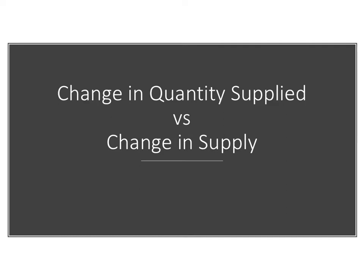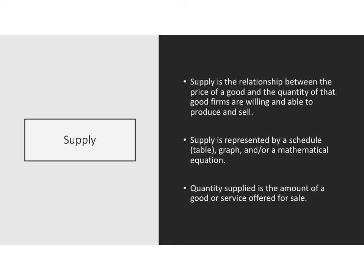In this video we want to explore the difference between a change in quantity supplied and a change in supply. Supply is a relationship between the price of a good and the quantity of the good that firms are willing and able to produce and sell. To illustrate a relationship, we need one of three tools: a schedule or table, a graph (called the supply curve), or a mathematical equation.